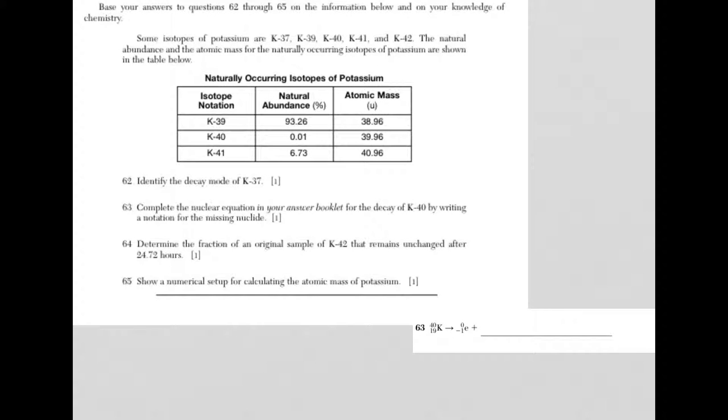This is questions 62 through 65 of the June 2015 Chemistry Regents exam. Try to answer the questions yourself. Make sure you have your reference tables and a calculator. Hit the pause button and then come back for answers and explanations.